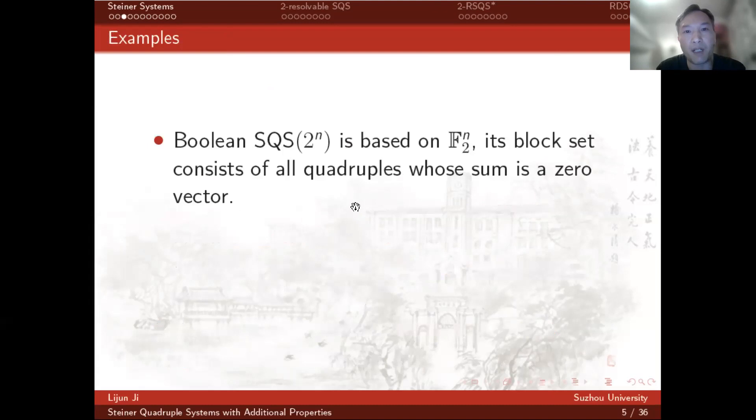For example, a brilliant Steiner quadruple system of order 2 to the power n is based on an n-dimensional space over F_2. Its block set consists of all quadruples whose sum is a zero vector.